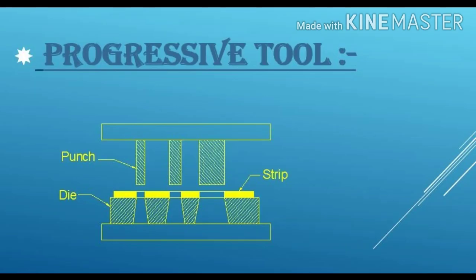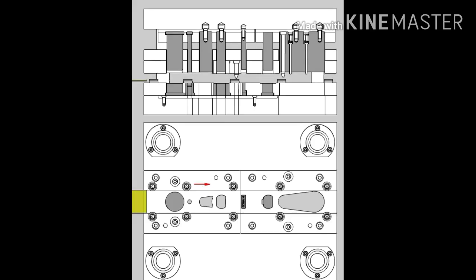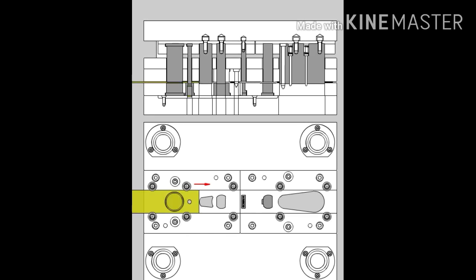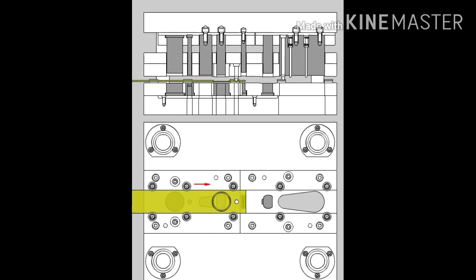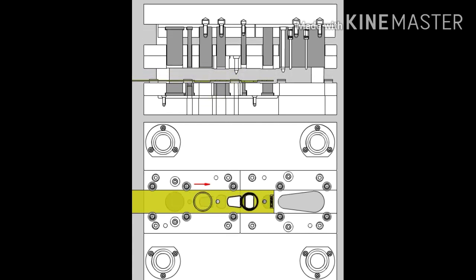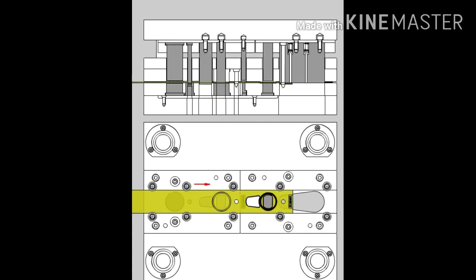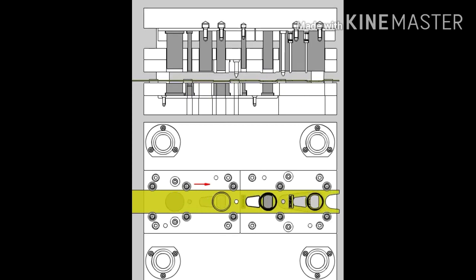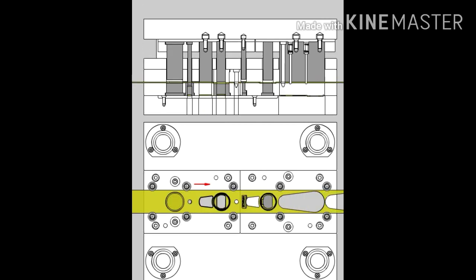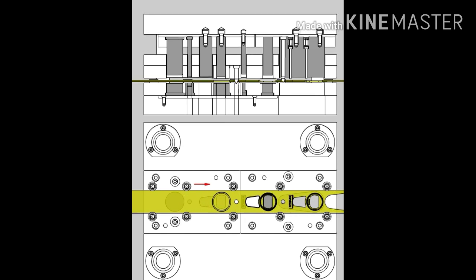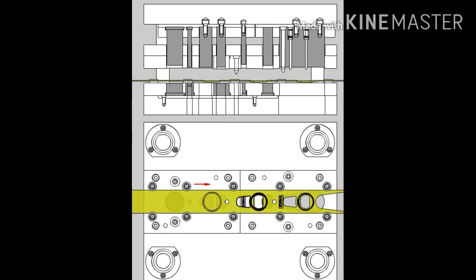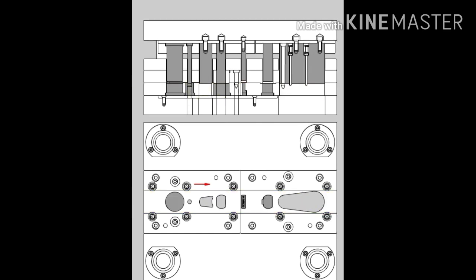Now we are going to see the progressive tool. The workpiece moves from one station to another, with separate operations being performed at each station — that is called the progressive tool. In the diagram, you can see there is a punch and separate operations will be performed at each station, meaning it is progressive — it shows progress at every station, so it is called the progressive tool. Construction-wise, the progressive tool is a little bit complex. In my earlier videos, I have explained the types of operations like cutting operations and non-cutting operations, with links in the description box.